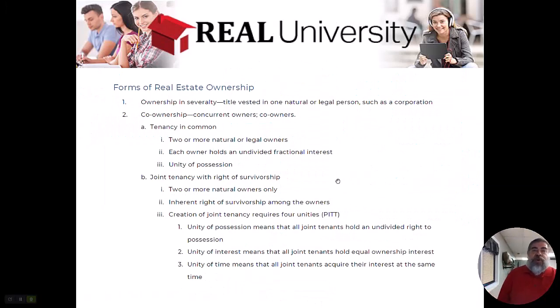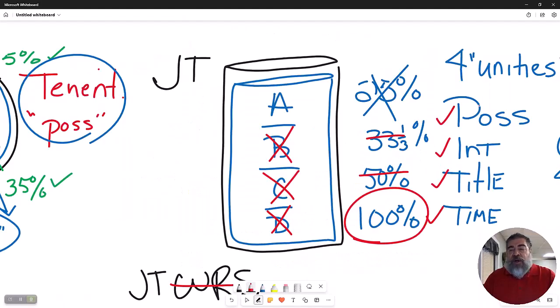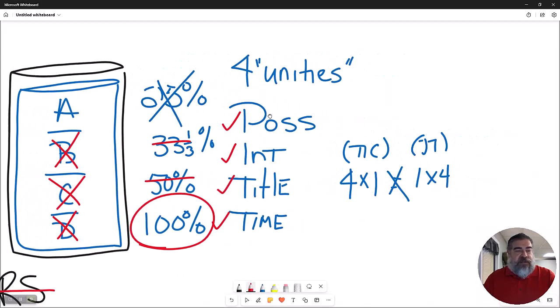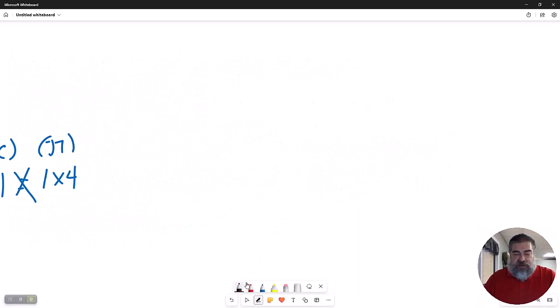Those are the two ways that you would take co-ownership of a property. Now, there is a legal way to terminate this. This is called partitioning. So let's go over here. And I'm going to redraw that picture this time this way because it's a little easier to see.